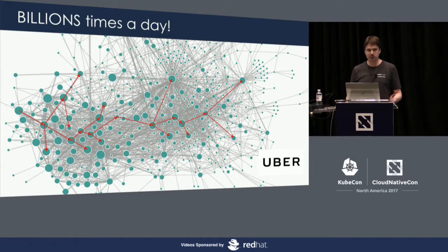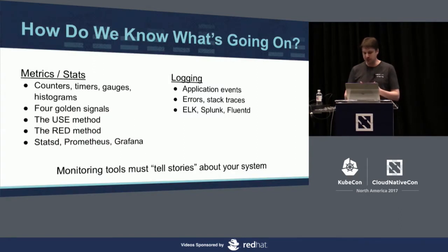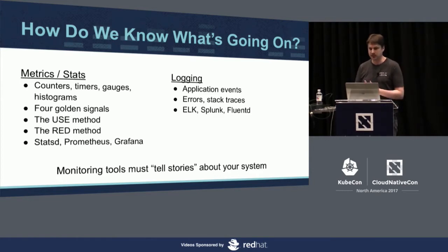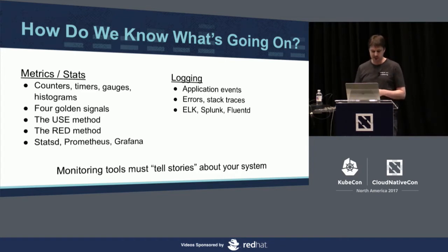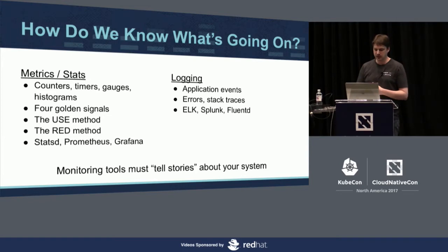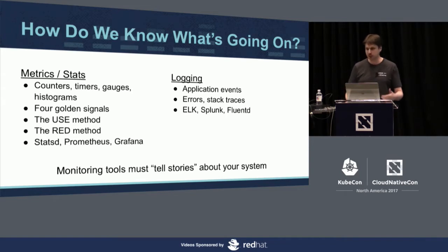So how do we monitor such a complex system to make sure everything is working? Traditionally we use metrics and logging as classic monitoring tools — counters, stats, gauges, etc. There are various techniques for knowing whether your components are healthy, and products like StatsD, Prometheus, and Grafana to collect and visualize those metrics. Similarly for logging, there's an ecosystem of tools to aggregate application events, errors, and stack traces.